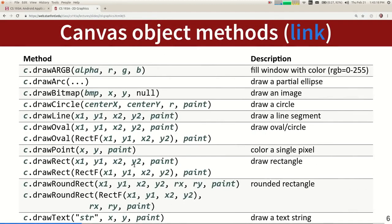Here are some of the methods that Canvas has — things like drawCircle, drawLine, drawOval. These names should look somewhat familiar. Some have two different versions: for example there's one that takes a RectF object and one that takes individual coordinates. That's not very hard to navigate.